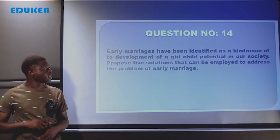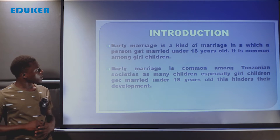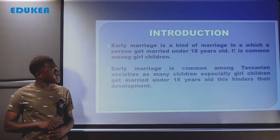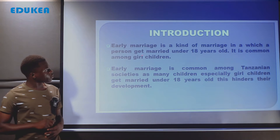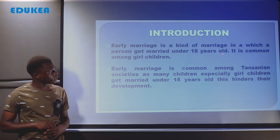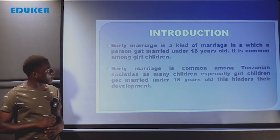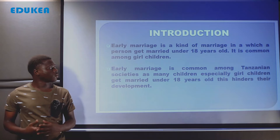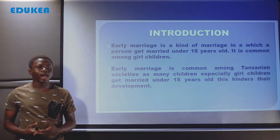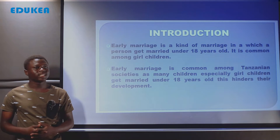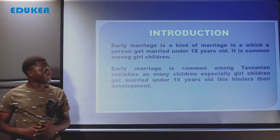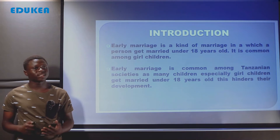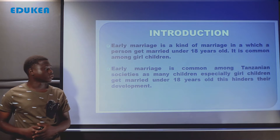By definition, early marriage is the kind of marriage in which a person gets married under 18 years old. It is common among girl children. Katika jamii yetu, ni ndoa ambayo mtu anaolewa akiwa na chini ya umri wa miaka kumi na nane, na hii iko common sana kwa watoto wakike ambao hawajafika umri wa miaka kumi na nane.